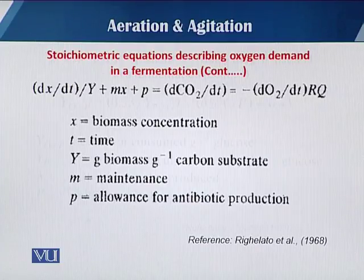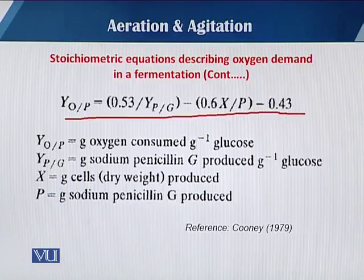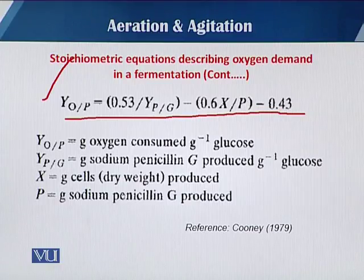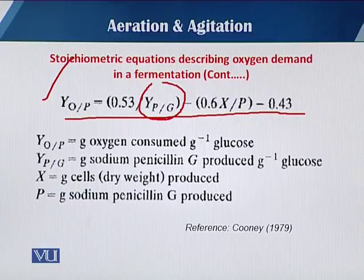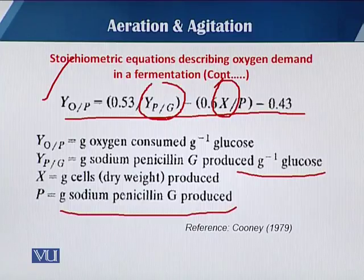Another equation was reported by Kone 1979. Here, Y_o/p is the oxygen in grams consumed for one gram of glucose, and Y_p/g is the yield in grams of sodium penicillin, because Kone in 1979 reported this equation while producing penicillin G. Capital X is the grams of cells produced during the fermentation process, and P is the overall yield of penicillin G.